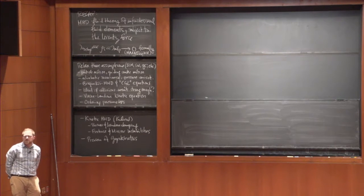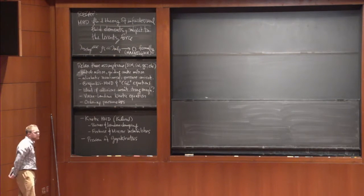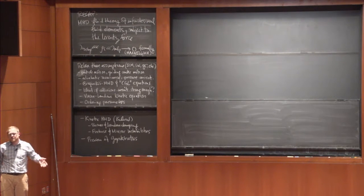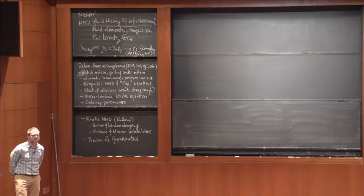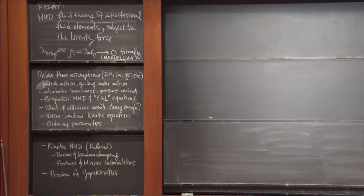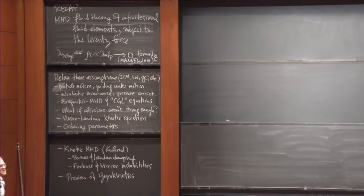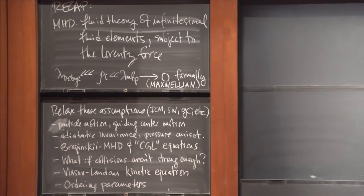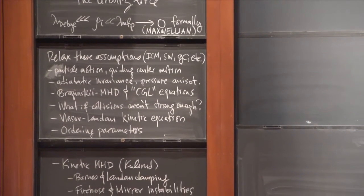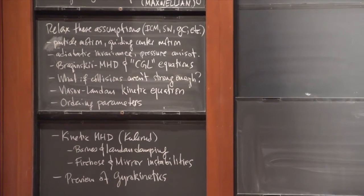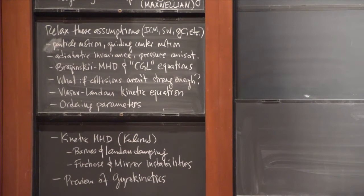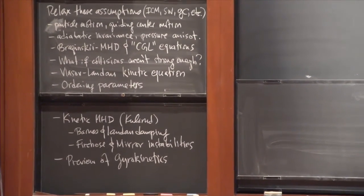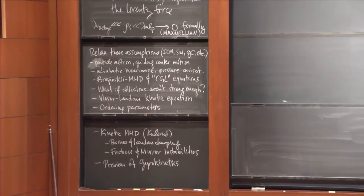The charge density is formally zero. The other things that are formally zero in MHD are the Ion-Larmor scale—which is very small in many astrophysical systems, meaning they're very well magnetized—and the mean-free path, which is something we're going to relax in this lecture. This means the distribution function is locally Maxwellian to all orders, which is not the case in many astrophysical and space systems.